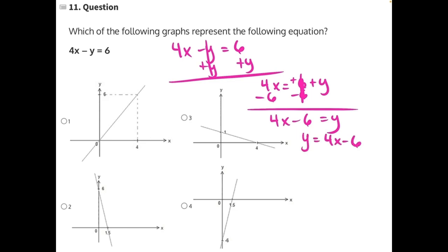So what we're looking for is the graph to cross the y-axis at negative 6, which it does only in our fourth option, right? Crossing the y-axis at negative 6. So that is our correct answer.